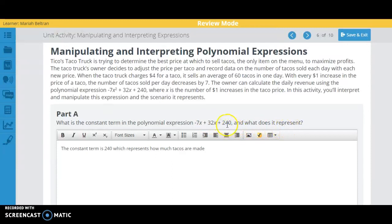So what this represents, what 240 means, is that's our revenue. Remember, this is talking about revenue. That's our revenue when x is zero. So let's look back to what x is again. x is the number of $1 increases. So if x is zero, that means there's no $1 increases.